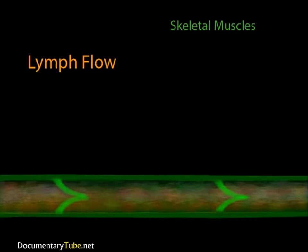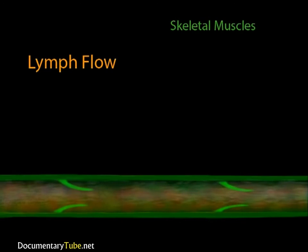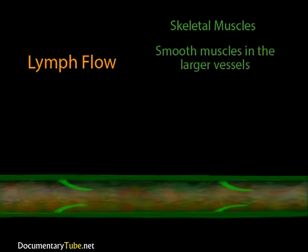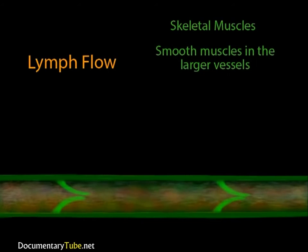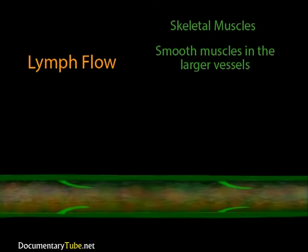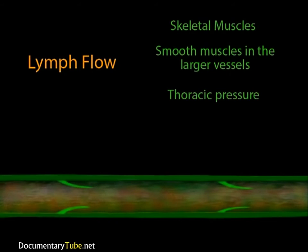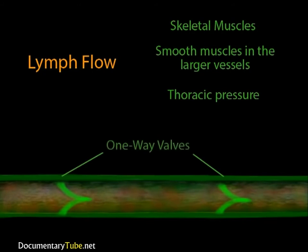This pushes lymph through the vessels. In addition to the contraction of skeletal muscles, there are two other means by which lymph travels through the lymphatic system. There are smooth muscles at the larger lymph vessels, and the contraction of these smooth muscles adds to the force provided by the skeletal muscles. Also, when we breathe, pressure changes occur in the thoracic region. When the thoracic pressure drops, that tends to pull lymph into the thoracic duct. One-way valves prevent the lymph from flowing backwards.